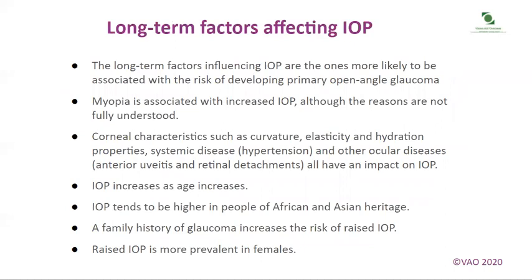Long-term effects on IOP: the long-term factors influencing IOP are more likely to be associated with the risk of developing primary open-angle glaucoma. Myopia is associated with increased IOP, although the reasons are not fully understood. Corneal characteristics such as curvature, elasticity and hydration properties, systemic disease, hypertension and other ocular diseases such as anterior uveitis and retinal detachments all have an impact on IOP. IOP increases with age and tends to be higher in people of African and Asian heritage. A family history of glaucoma increases the risk, and raised IOP is more prevalent in females.